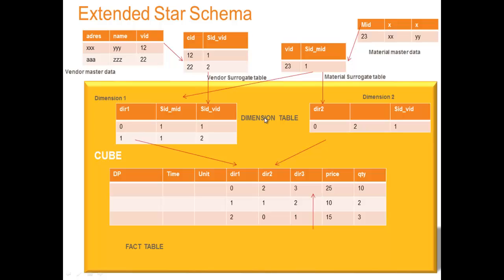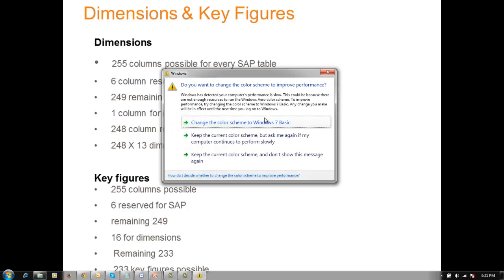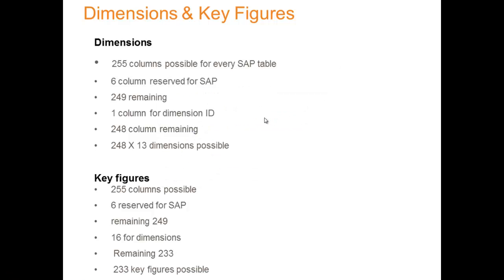What are the dimensions and key figures? There are around 250 columns possible for every SAP table, 6 columns reserved for SAP, leaving 249. One column is for dimension ID, leaving 248 columns remaining. So 248 into 13 dimensions are possible, as per the dimension calculations.